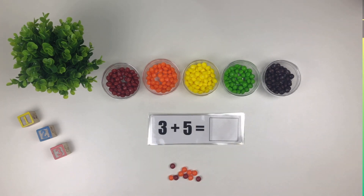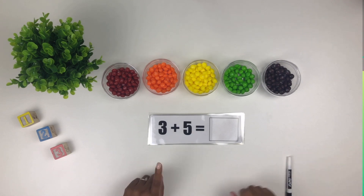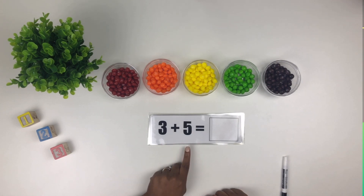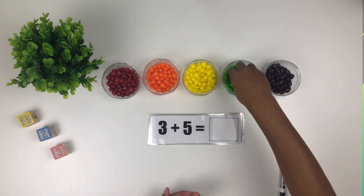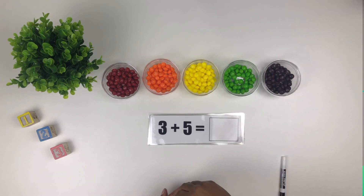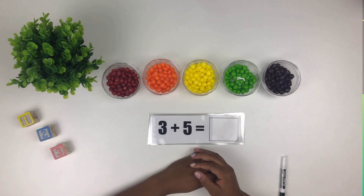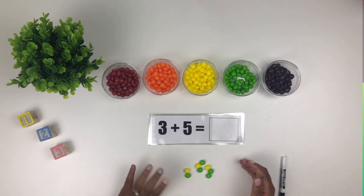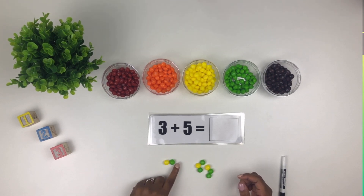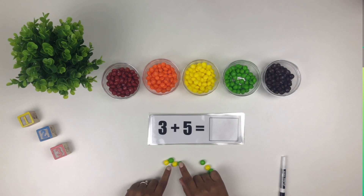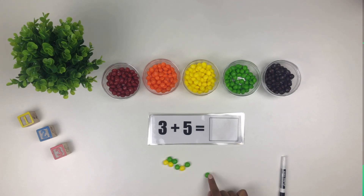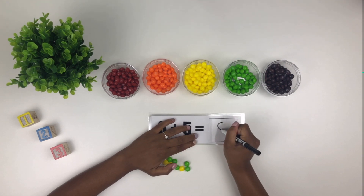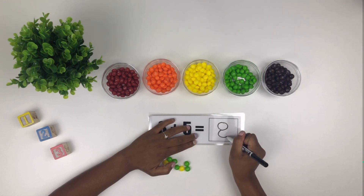Good job. Our next problem is three plus five. So we'll take three yellow Skittles and five green Skittles. So three plus five equals eight.